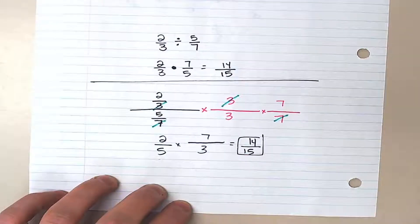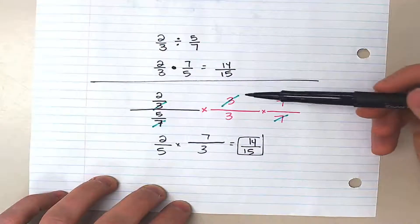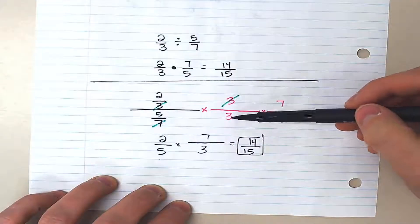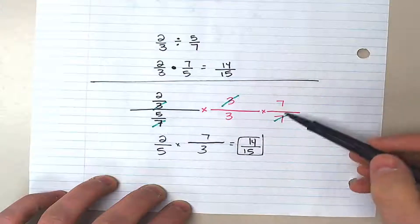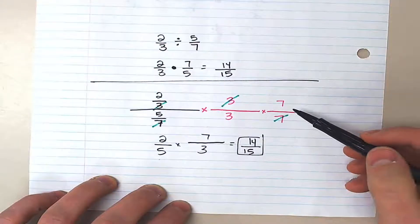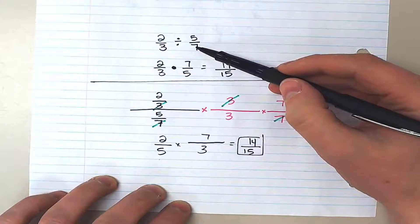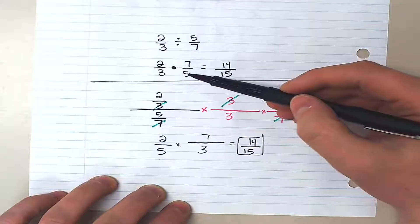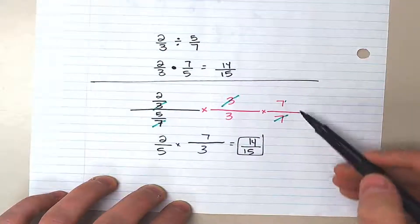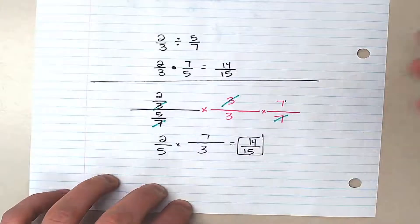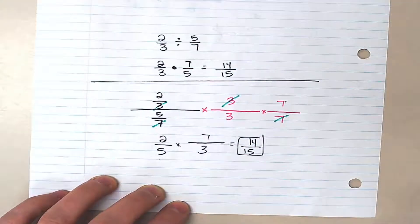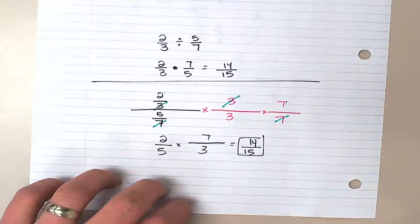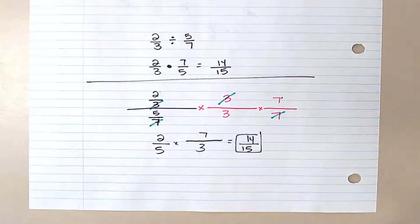The same result. So what we're trying to do is get rid of denominator three by multiplying by three over three, and multiply by seven over seven to get rid of that seven. What's left over is the reciprocal of the second fraction — seven over five — along with the two-thirds. This is another way of looking at dividing fractions without just memorizing the reciprocal rule.